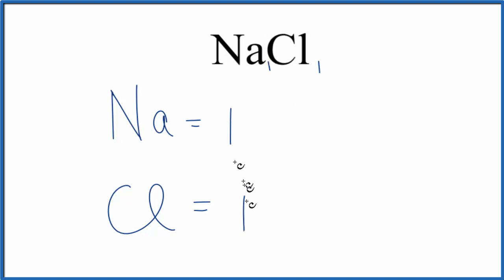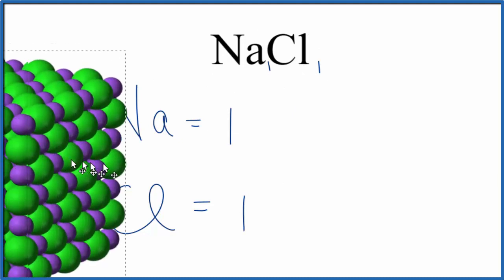If you wanted to count up the total number of atoms in NaCl, you'd have 1 plus 1 equals 2. But understand, NaCl doesn't really exist just by itself. It normally is what we call a formula unit in a crystal.